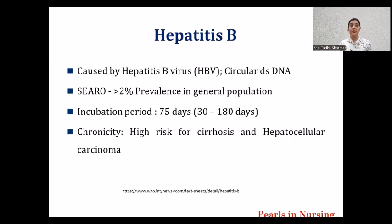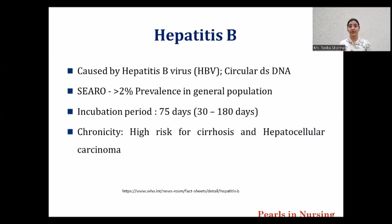It has been seen that in the Southeast Asia region, the prevalence of Hepatitis B in the general population is more than 2%, which is a big number. The average incubation period for Hepatitis B is 75 days, ranging between 1 month to 6 months — that is 30 days to 180 days. With Hepatitis B infection, we can have acute infection or we can have chronic infection.